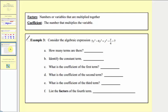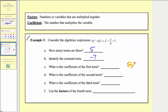Now let's take a look at our last example. We're given the algebraic expression five y to the fourth minus eight y cubed plus y squared minus y divided by four minus seven. We're first asked how many terms there are — the terms are parts separated by addition or subtraction — and there are five terms. The constant term, the term with no variable factors, is negative seven. The coefficient of the first term, five y to the fourth, which means five times y to the fourth, is five.